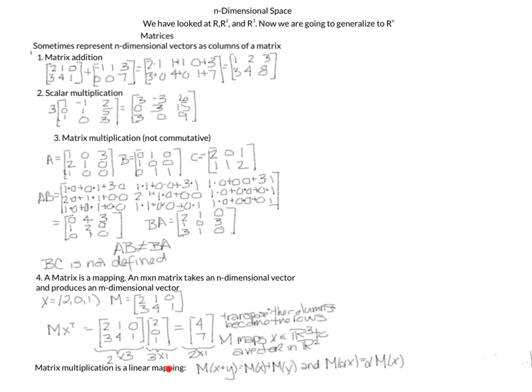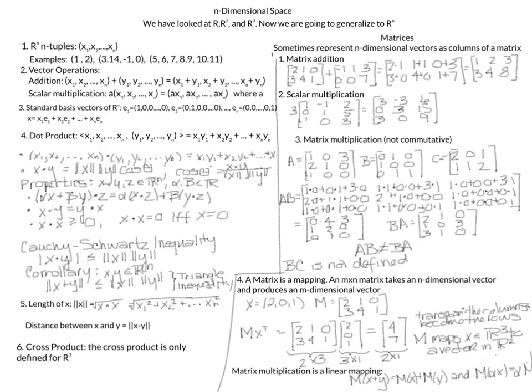This mapping is a linear map. So if you have a matrix times (x plus y), that equals the matrix times x plus the matrix times y. Also, if you have a matrix times a scalar times x, you can pull out the scalar. And that's our tour of the Euclidean space. Thank you for watching.